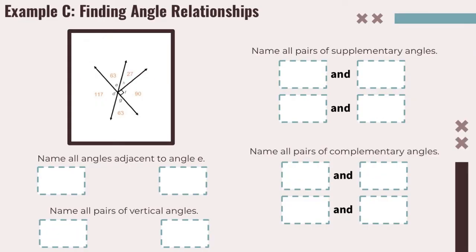Now let's take a look at Example C, which asks us to find angle relationships from a diagram. First, name all angles adjacent to angle E. Angle E is shown in purple, and we need to find angles next to it. On one side is angle H, and on the other side is angle D — those are the two angles adjacent to angle E. Next, name all pairs of vertical angles. Vertical angles must be across from each other and equal. The only pair here is E and G — both equal 63 degrees.